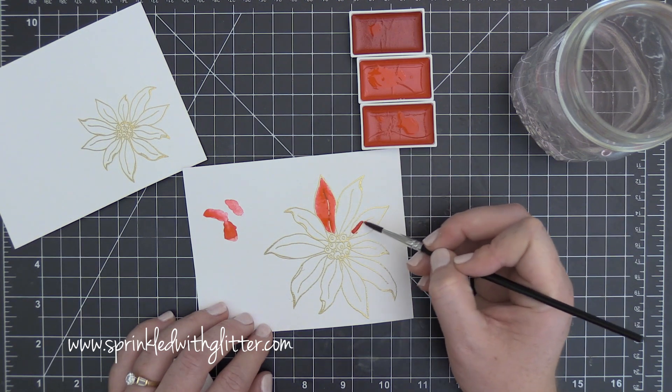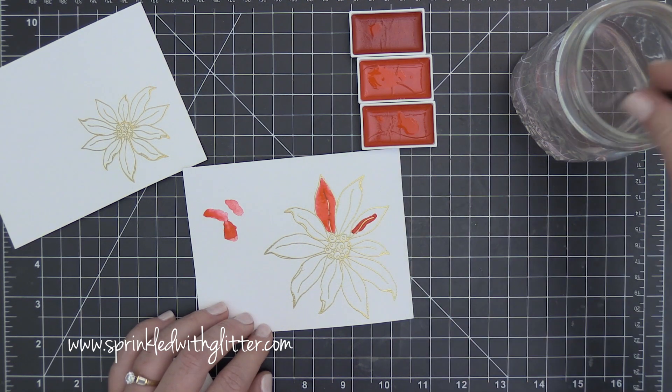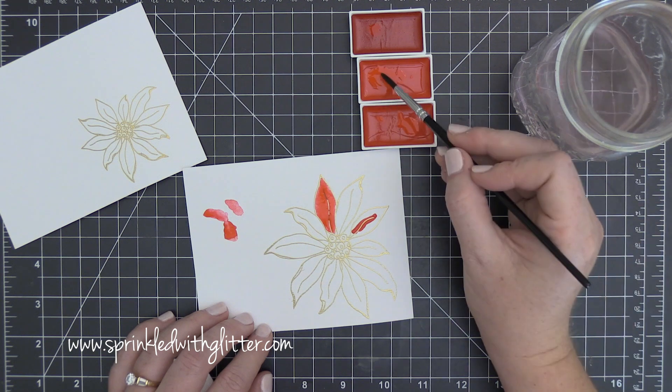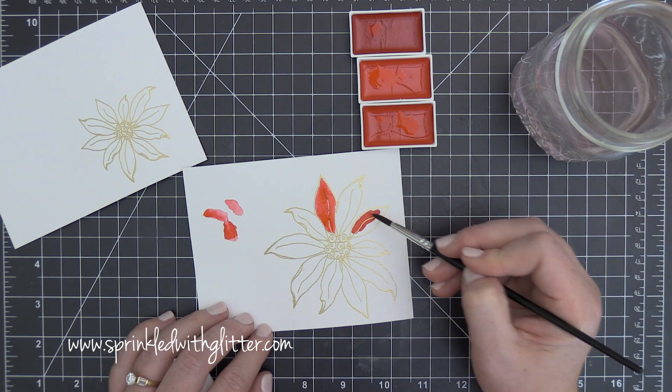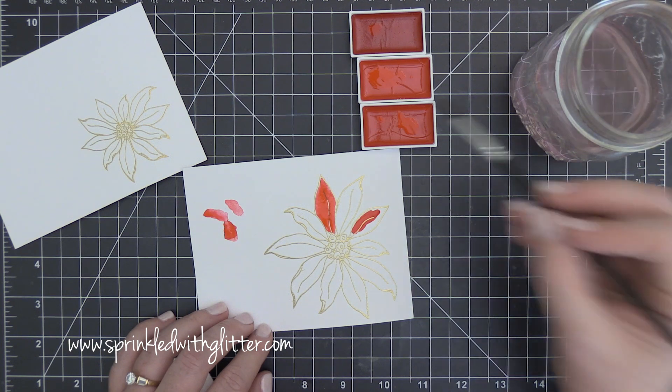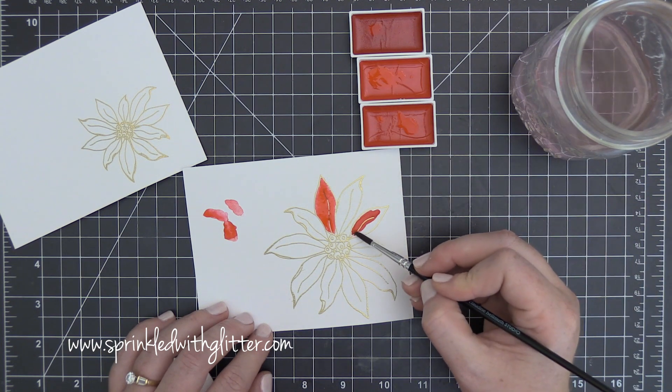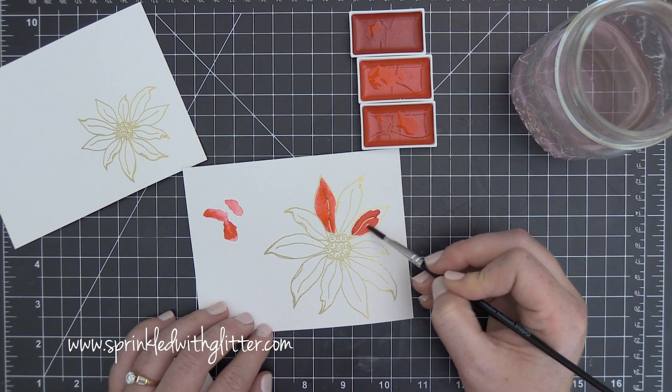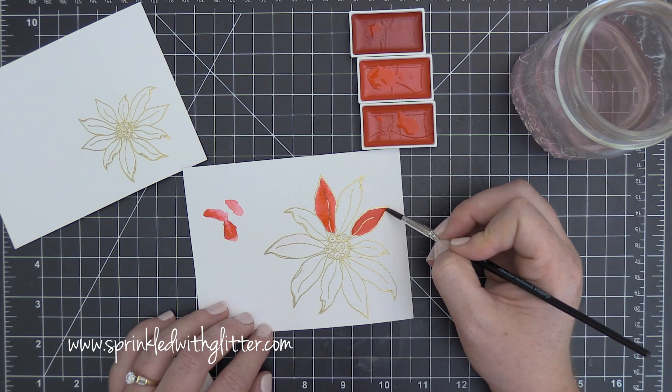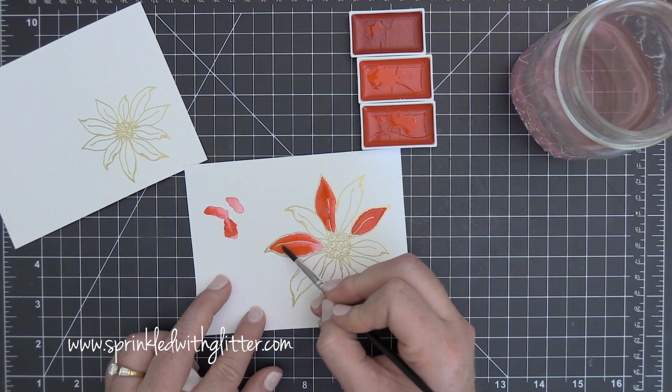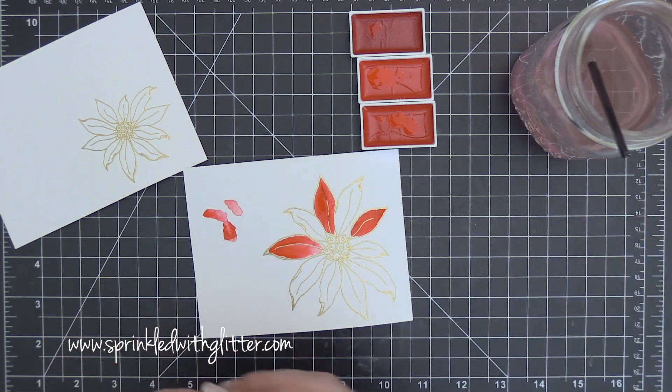You'll notice also that I'm not working with the flower petals that are directly connected to each other because sometimes when you add watercolor to two areas that are touching, the color from one can kind of bleed over into the other. I really like to have a lot of control over my watercolor so I'm just kind of going every other petal for now.